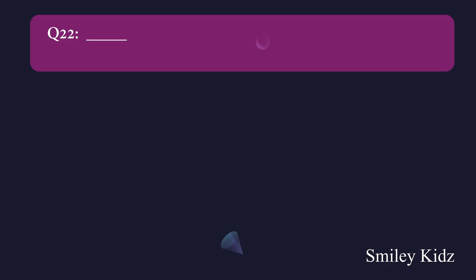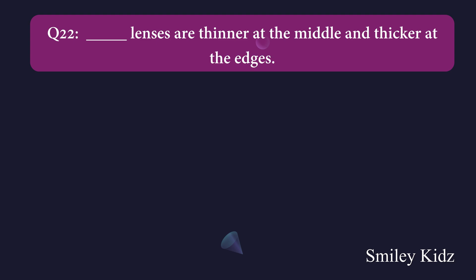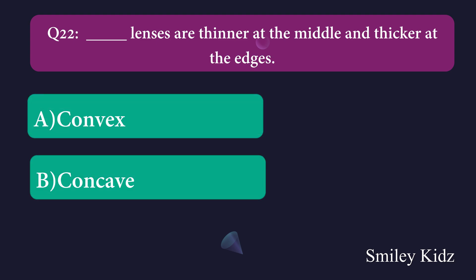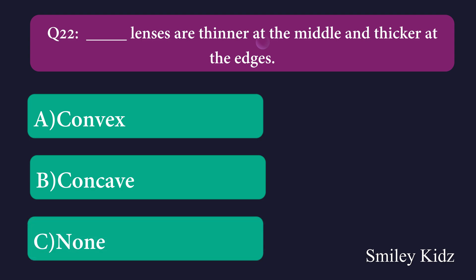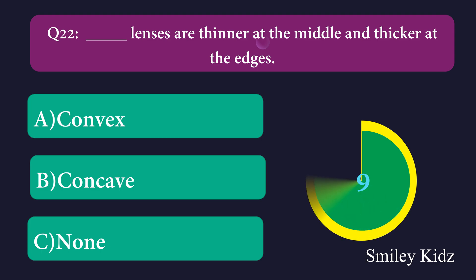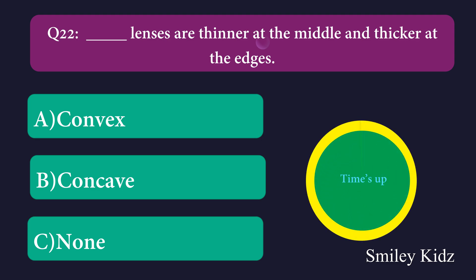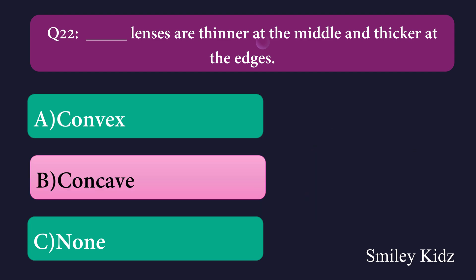Question number twenty-two: Dash lenses are thinner at the middle and thicker at the edges. Option A: convex, Option B: concave, Option C: none. The right answer is concave. Concave lenses are thinner at the middle and thicker at the edges.